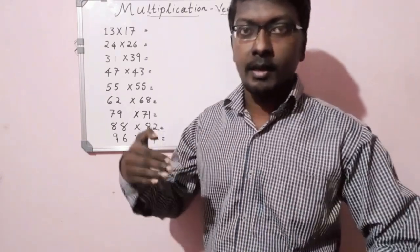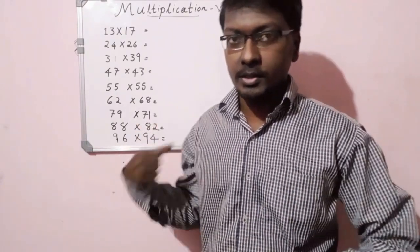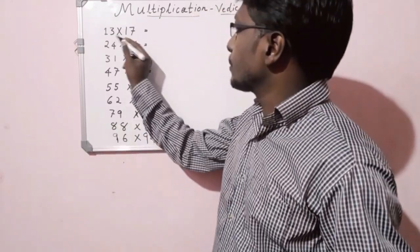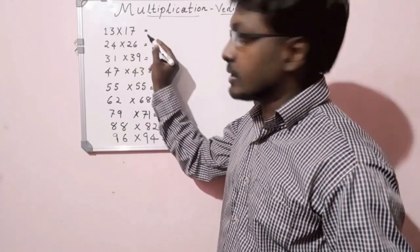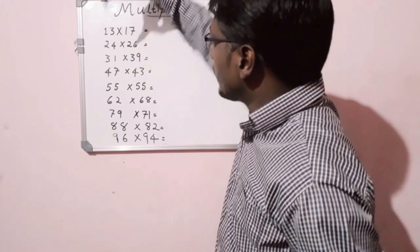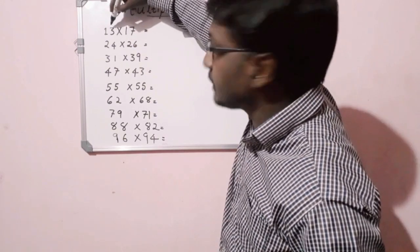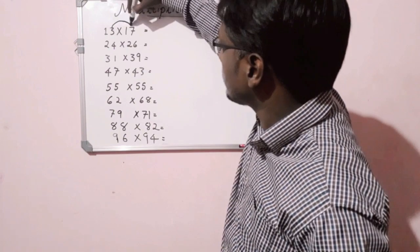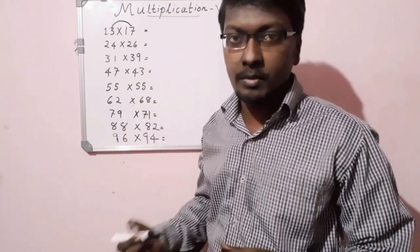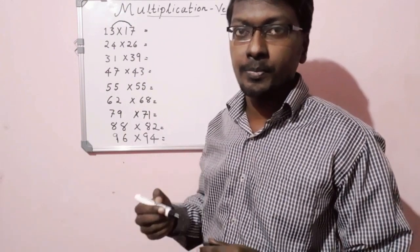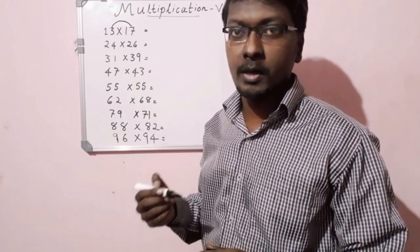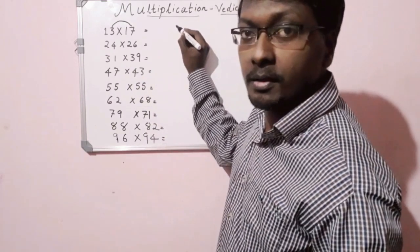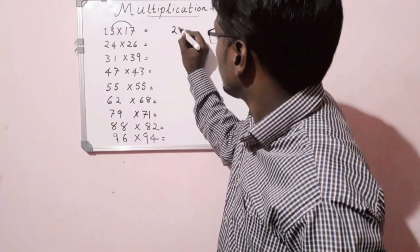Now we have to multiply these numbers. First, I am going to do that. You will look at the ones place — you will take 3 and 7. We multiply 3 into 7, that is 7 into 3, which gives us 21.